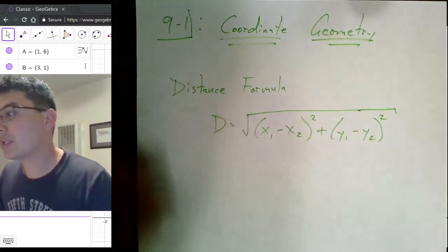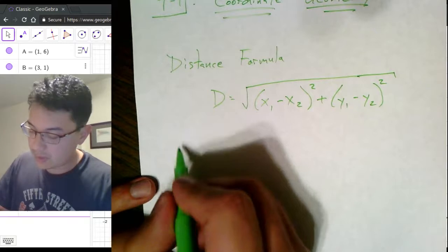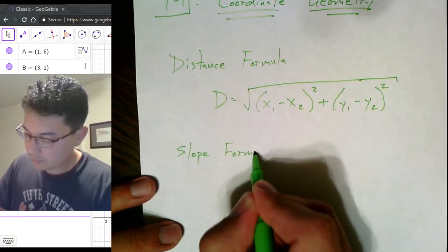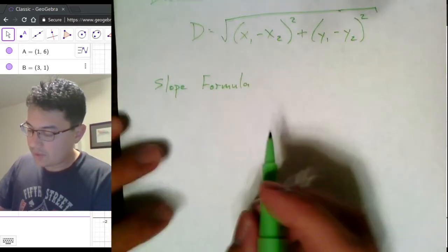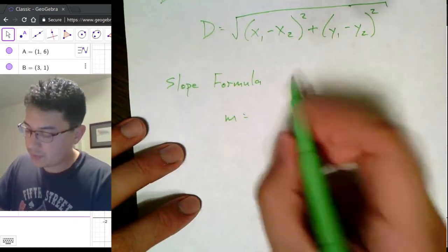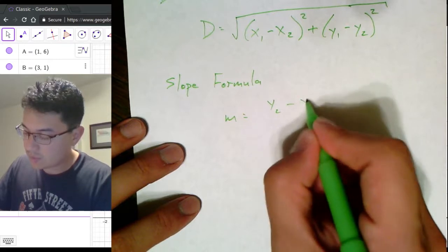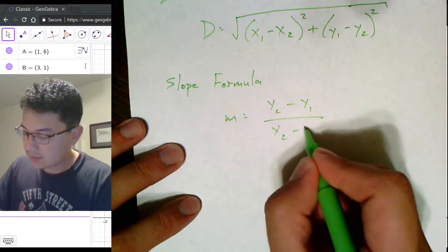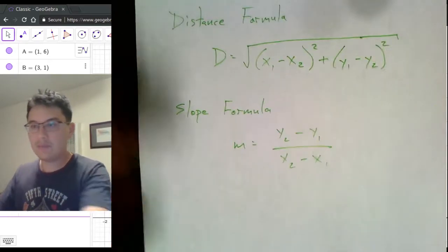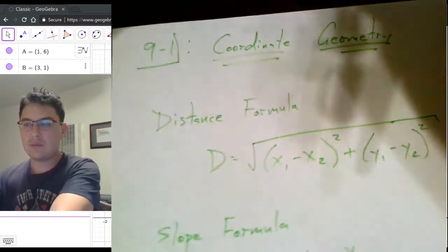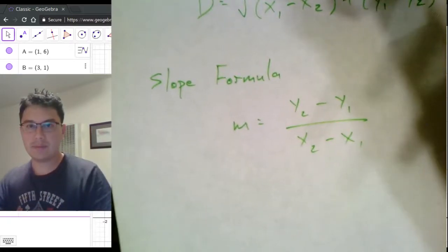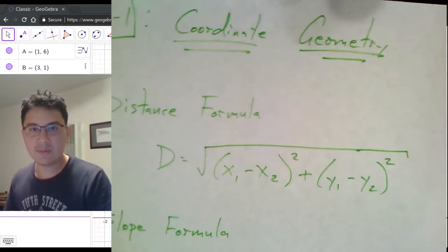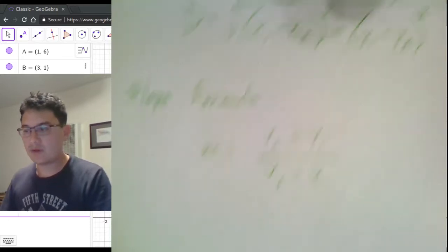The next thing that we will need is the slope formula. So slope equals y2 minus y1 all over x2 minus x1. Let me zoom this in just a tiny bit for us and make it just a little bit clearer. There we go. So we've got our distance formula and we have our slope formula.